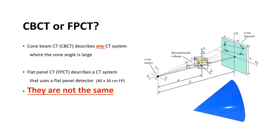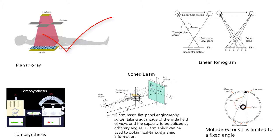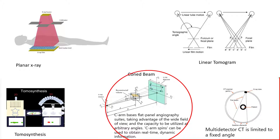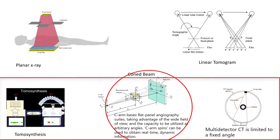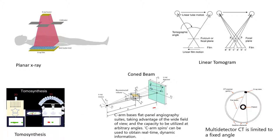CBCT and FBCT are not the same — CT stands for computed tomography. We begin with a two-dimensional planar x-ray, then linear tomography, followed by tomosynthesis, CT scanners, and finally cone beam CT. Tomosynthesis is used in conjunction with a computer but the acquisition rotation is less than 360 degrees, while computed axial tomography uses a full 360-degree acquisition.